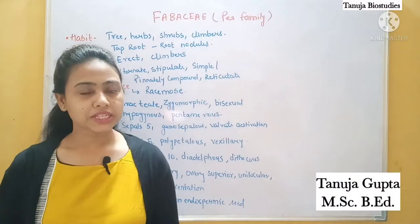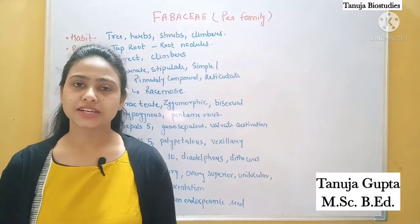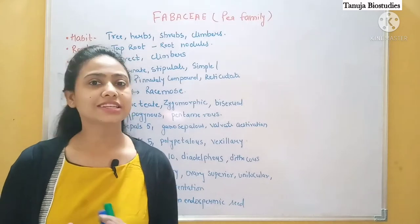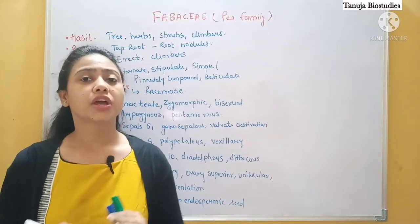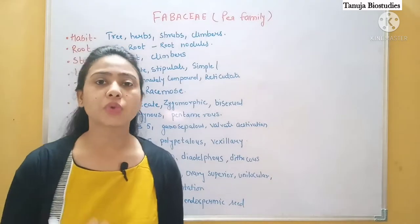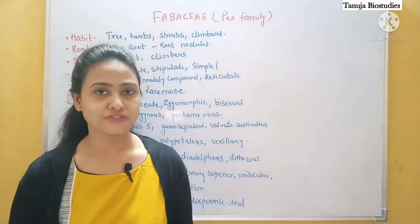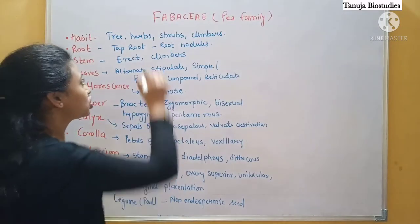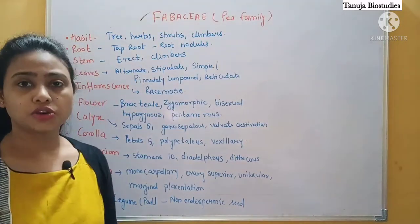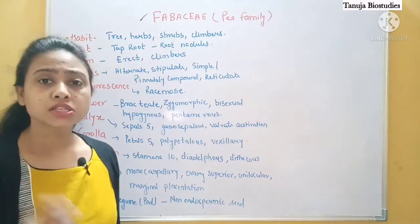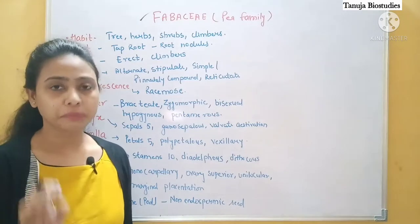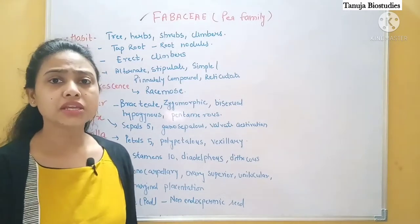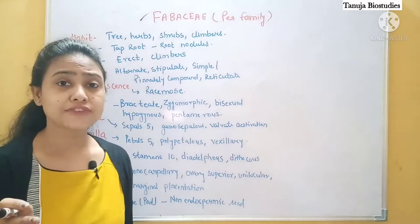Hello everyone, welcome to my channel Tanuja Bio Studies. After talking about the floral formula as well as the diagram, now let's take one by one all the plant families. The first plant family we are taking is the Fabaceae — also called the pea family. Matala, pea, gram, bean — all the pulses belong to this family.